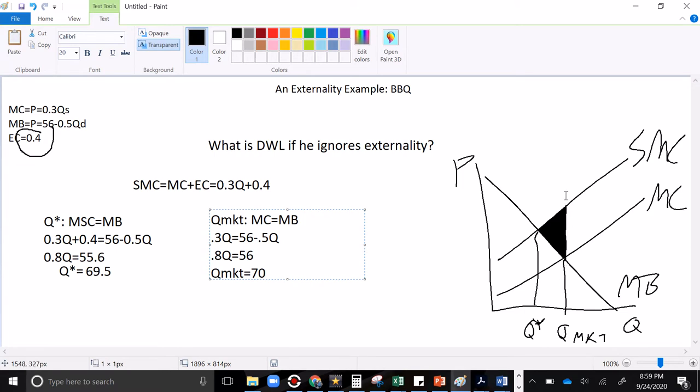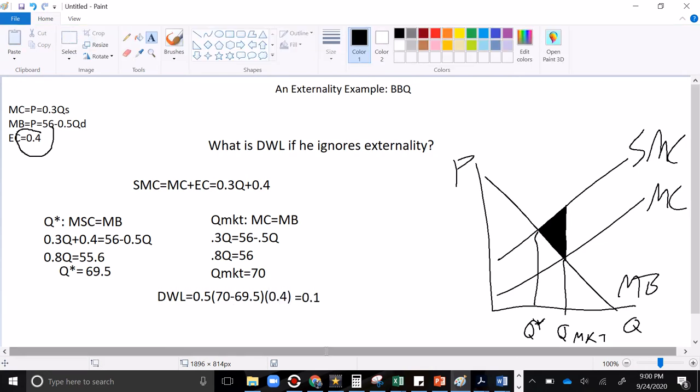So the deadweight loss for this thing: it's 40 cents high, because that is the external cost at the market quantity, and it is half a pound of meat wide. So deadweight loss equals 0.5 times the base, 70 minus 69.5, times the height, which since we have constant external cost is just 0.4, gives us 0.1. So I hope that was helpful.